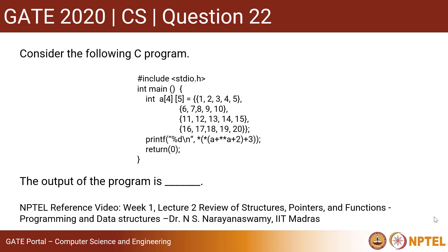This is GATE 2020 Computer Science question 22. Consider the following C program — a code snippet is given. We have to determine the output of the program. In the code snippet there is a 2D array, and the code basically prints a certain expression, so we have to calculate the value of that expression to get the output.